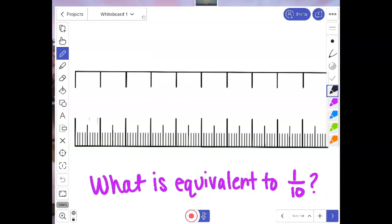All right, and I think this is our last one. So what's the same as one tenth? That would be ten hundredths. One tenth equals ten hundredths.